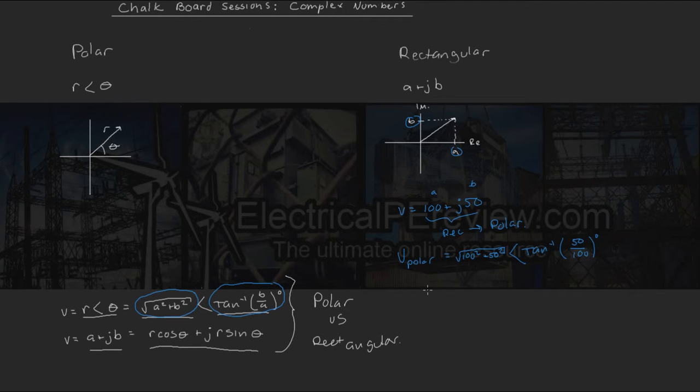Plug it in and solve, and we end up v in polar equals 111.8, which is our magnitude, at an angle of 26.57 degrees.